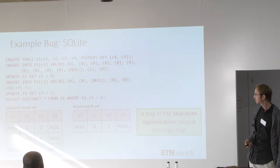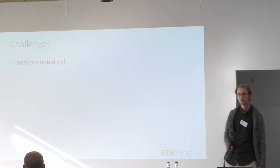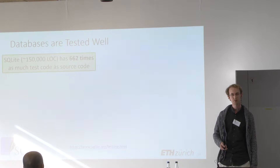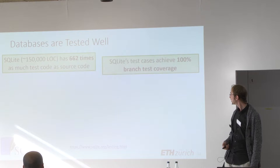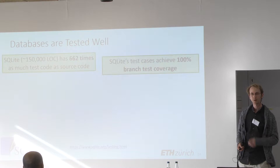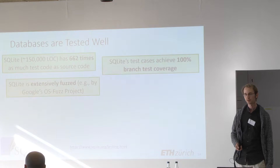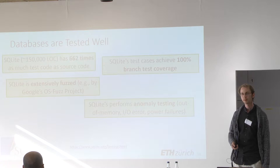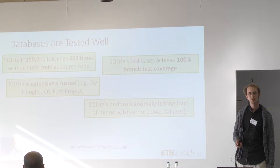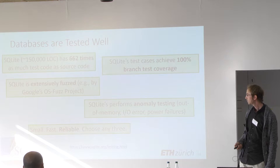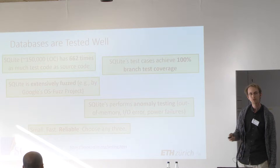What are the challenges for testing database management systems? First, they are tested really well. SQLite has about 700 times as much test code as source code. SQLite's test cases achieve 100% branch test coverage, and they even have a stricter metric where they also achieve 100% coverage. SQLite is also extensively fuzzed, for example by Google's OSS-Fuzz project. They also do anomaly testing ensuring SQLite performs correctly in the presence of out-of-memory situations, I/O errors, and power failures. All the database management systems we tested are mature software expected to be very reliable.